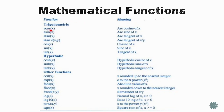This is the list of mathematical functions available under math.h. Trigonometric functions include: acos(x), asin(x), atan(x), atan2(x,y) for the tangent of x divided by y, cos(x), sin(x), tan(x). Hyperbolic functions include: cosh(x) for hyperbolic cosine, sinh(x) for hyperbolic sine, and tanh(x) for hyperbolic tangent.